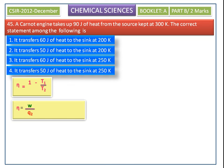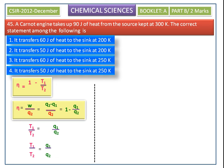According to Kelvin's statement, W equals Q2 minus Q1, so we get the new equation: efficiency equals 1 minus Q1 by Q2. Equating these two efficiency expressions, we cancel common terms and get T1 by T2 equals Q1 by Q2. The given values are T2 = 300 K and Q2 = 90 J.